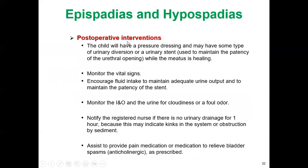Postoperative interventions and nursing care: the child will have a special dressing and may have some type of urinary diversion or urinary stent while the meatus is healing. Monitor the hurdle sign. Encourage fluid intake to maintain adequate urine output and to maintain patency of the stent. Monitor intake and output, and urine for cloudiness or foul odor, which may indicate infection. Notify the registered nurse if there is no urinary drainage for one hour, as this may indicate a kink in the system or obstruction by sediment.